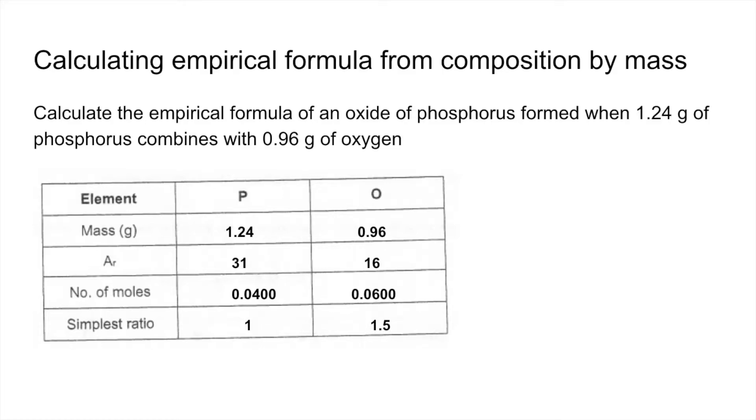Now, what we can't do is round that 1.5 up to 2. So we have to multiply out. So we're going to multiply both of these by 2. And that's going to give us the simplest whole number ratio, 2 to 3. So the empirical formula for this compound is P2O3.